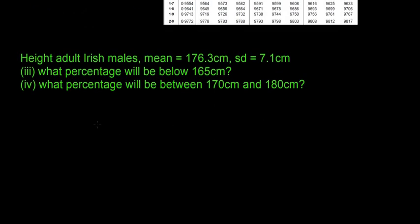So I guess we'll start with number three. So we'll say number three below 165. So again, the first thing is we want to find the Z-score for 165. So it's going to be z = (165 - 176.3) / 7.1. And that would give us a Z-score of minus 1.59.